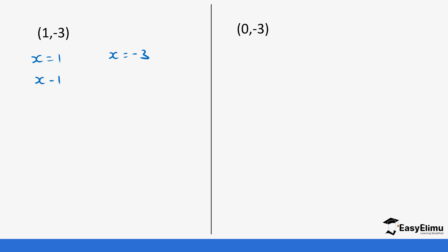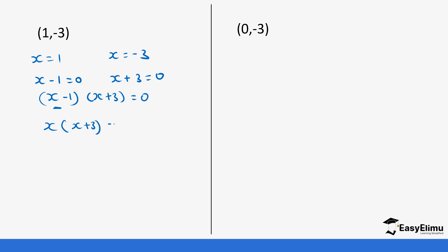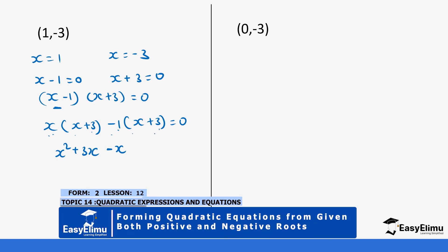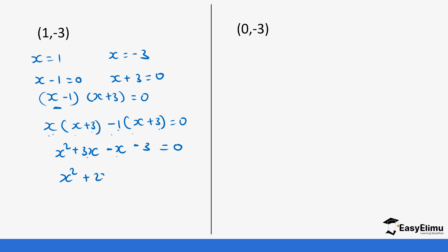And finally the last example. So x equals one and x equals negative three. So x minus one equals zero and x plus three equals zero. We expand: x into bracket (x plus three), then minus one into bracket (x plus three), equals zero. So x times x gives x squared, x times 3 gives 3x, negative one times x gives negative x, and negative one times 3 gives negative three. So this is x squared plus 3x minus x minus three, which gives x squared plus 2x minus three equals zero.